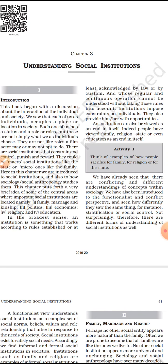Now let's start. If we recap what we have learnt till now, sociology talks about the interaction of the individual in society, and we know that each one of us as an individual occupies a place or location in society, and each of us has a role or multiple roles to play. But these are not what we have chosen for ourselves — there are numbers of factors which define what role we will play in society. And there are social institutions that constrain, control, punish, and reward. There could be macro social institutions like the state, and micro social institutions like the family.